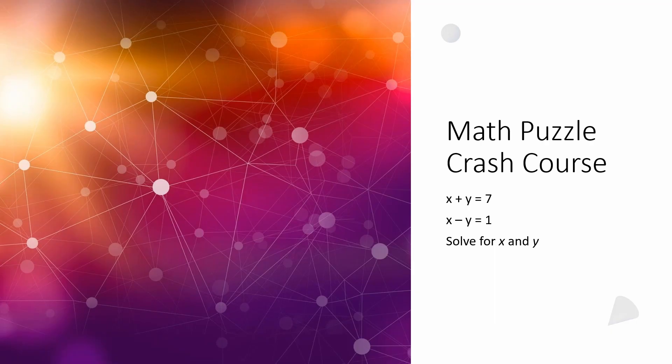Hello everyone and welcome back to the Math Puzzle Crash Course. I have another algebra problem with two variables. We have two equations and two variables and we want to solve for x and y. The first equation is x plus y equals seven. The second equation is x minus y equals one.